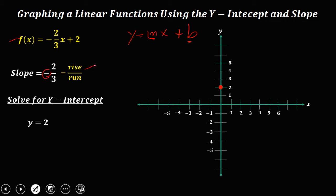Since the slope is negative, the rise is downward — so downward 2, counting 1, 2. Then for the run, that's 3 to the right — move 1, 2, 3. And this is the first coordinate.